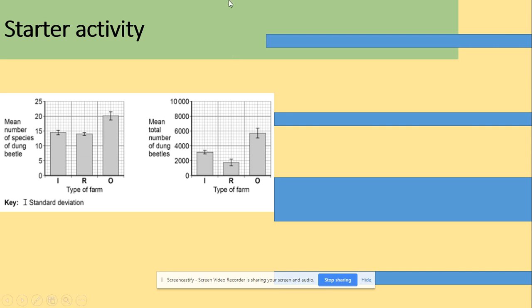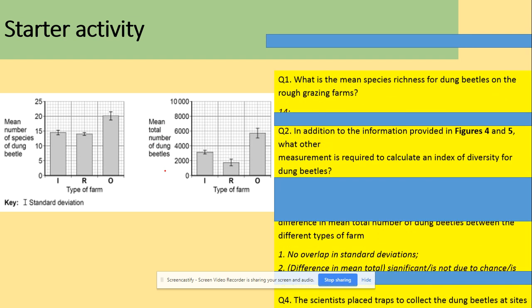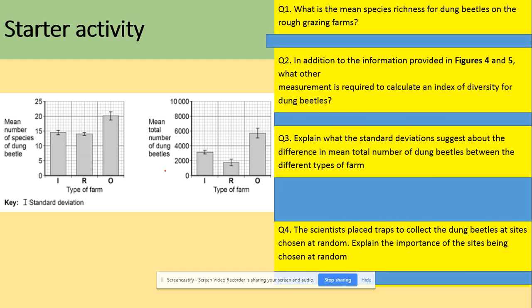So we've got the mean number here of species and then we've got the mean total number. The questions that come up are: what is the mean species richness, in addition to information provided in figure four and five what other measurements could be done, explain what the standard deviation suggests about this difference, and explain the importance of sites being chosen at random. So good application questions here.